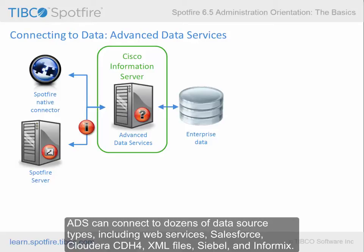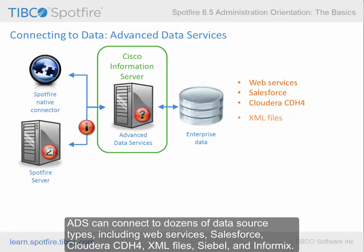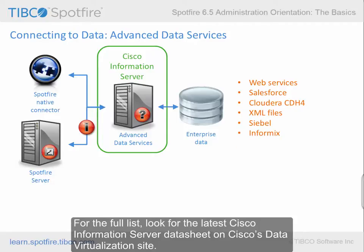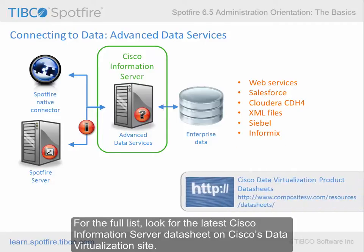ADS can connect to dozens of data source types, including Web Services, Salesforce, Cloudera CDH4, XML Files, Siebel, and Informix. For the full list, look for the latest Cisco Information Server data sheet on Cisco's data virtualization site.